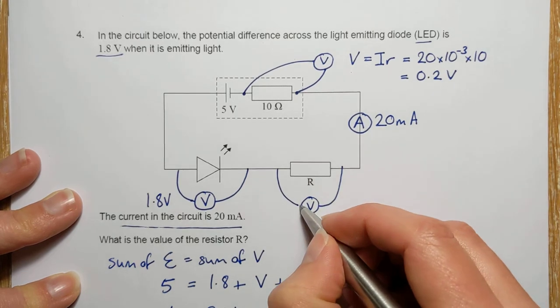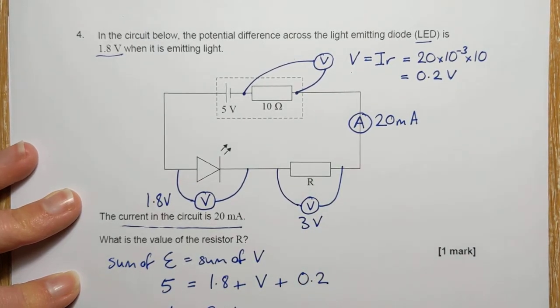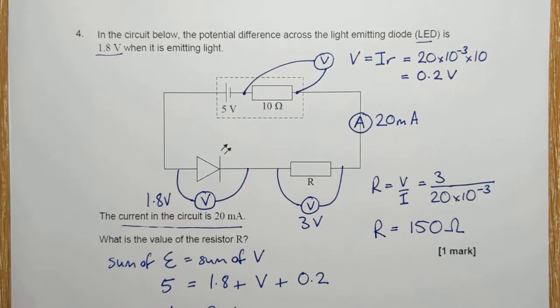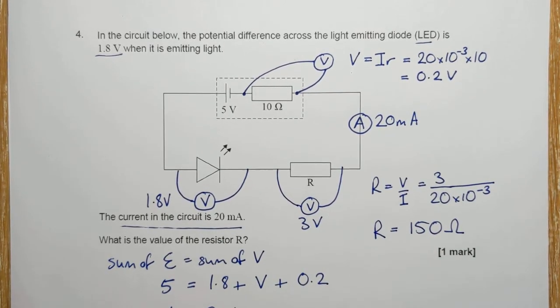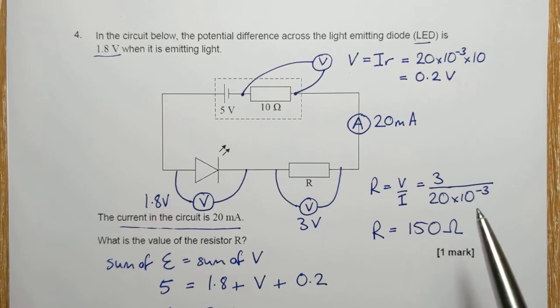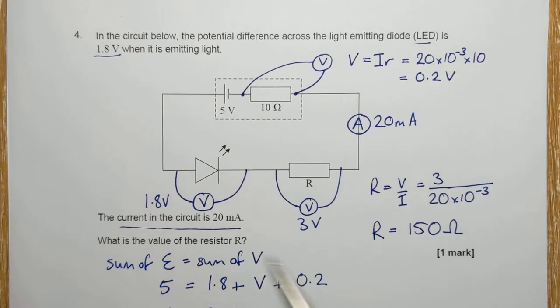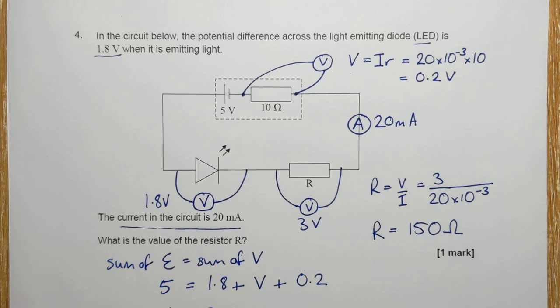I'm not worrying about significant figures here. So that's 3 volts there. And finally, I can then use Ohm's law again to calculate the resistance of the resistor. So you may not know how you're going to get there to start with, but just see what numbers they give you and just start working things out and gradually where you're headed to will become clear.